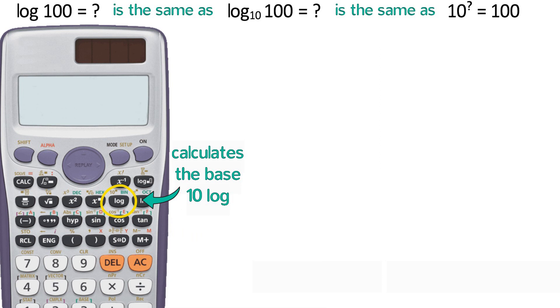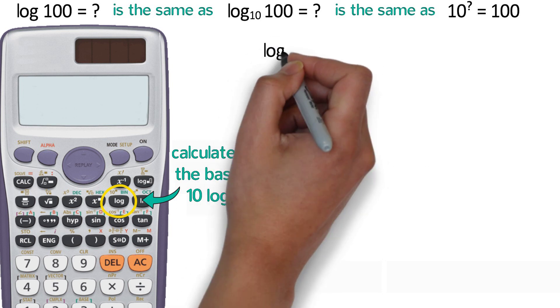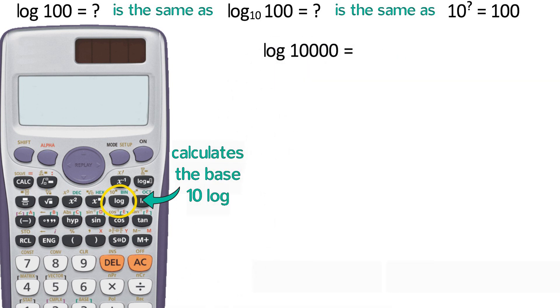For some numbers, the common logarithm can be easily calculated or estimated. Let's try several examples to help us see the bigger picture. What is the log of 10,000? In general, for base 10 logs, think about what the number is in scientific notation.